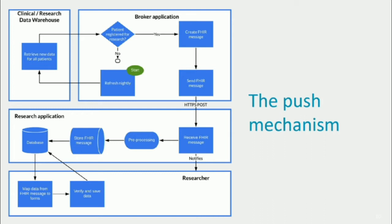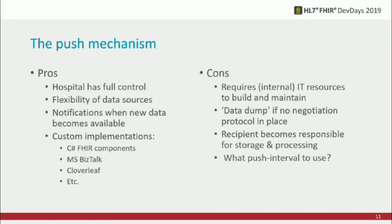For the push mechanism, there is a broker application that takes care of building the FHIR messages. It's usually a cron job that runs nightly and queries the clinical or research data warehouse for patient data. It checks whether this patient is enrolled in any research projects also running in Castor. If that's the case, the broker application builds a FHIR bundle with all the new resources created over the last day, creates a message, and sends that to the research application. We do a little pre-processing — we read which study and patient the data is for, store it, and wait for the researcher to come online.